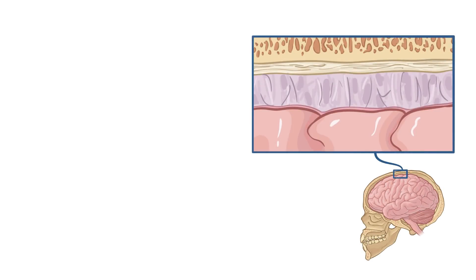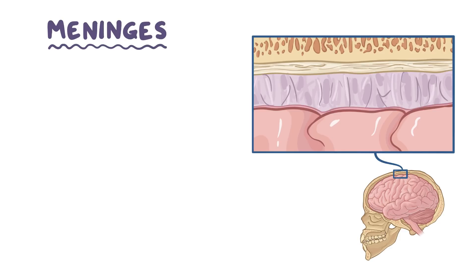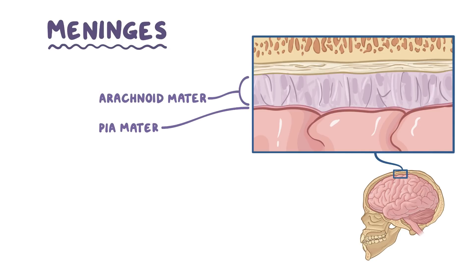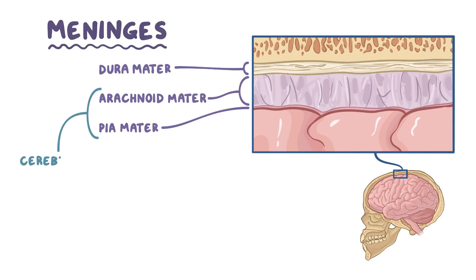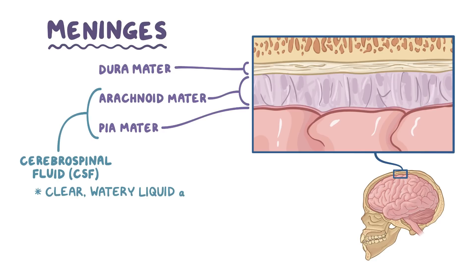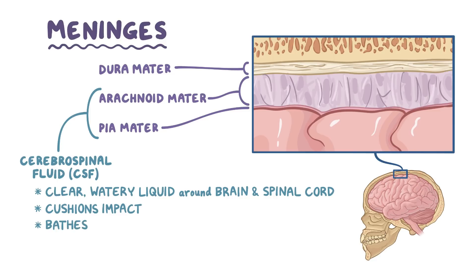The brain and spinal cord is covered by the meninges, which are three protective layers of the brain. The inner layer is the pia mater, the middle layer is the arachnoid mater, and the outer layer is the dura mater. The pia and arachnoid maters form the subarachnoid space, which houses the cerebrospinal fluid, or CSF. CSF is a clear, watery liquid which is pumped around the spinal cord and brain, cushioning them from impact and bathing them in nutrients.